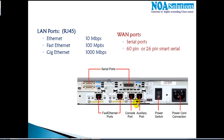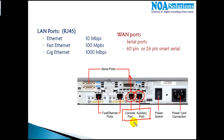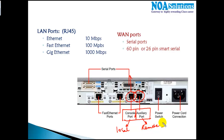The console port is used for local administration. There is one more port called the auxiliary port, and both ports are for administration only — for doing basic configurations. The key difference is that the console is for local administration and the auxiliary port is for remote administration.